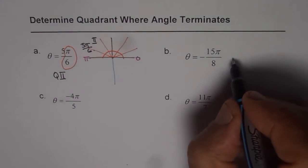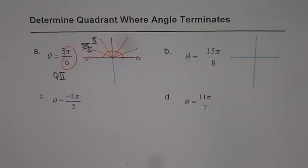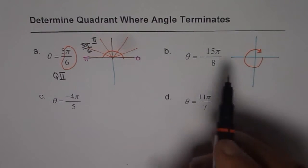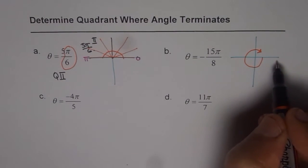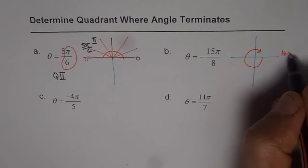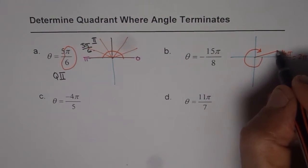Theta equals to minus 15 pi by 8. Now what does that mean? Minus means that the angle will be clockwise, kind of going like this. Do you see that? Now 15 pi by 8. So that means we have 8 divisions on this side and 8 there, right? So what is 2 pi equals to? 16 pi by 8 will be 2 pi, correct?